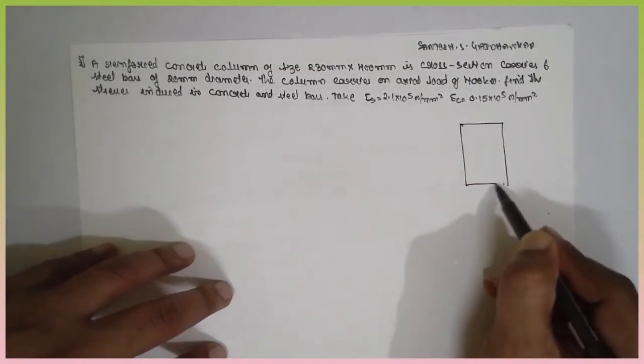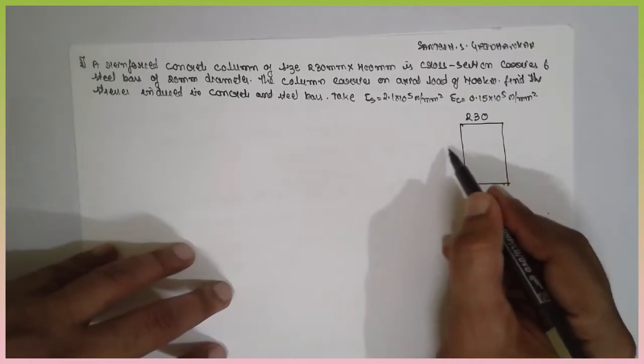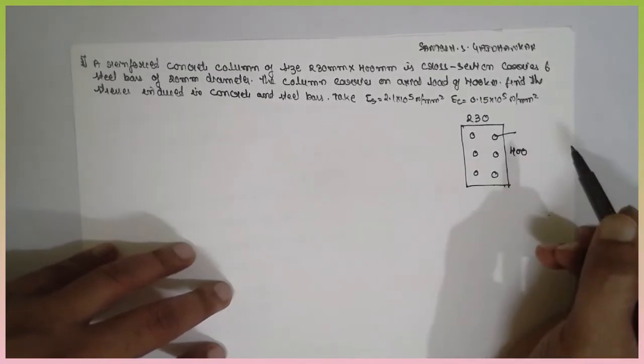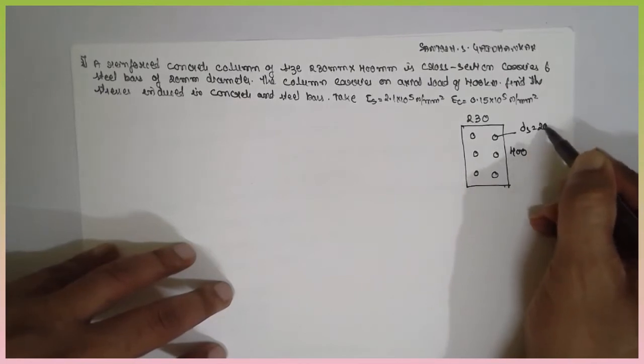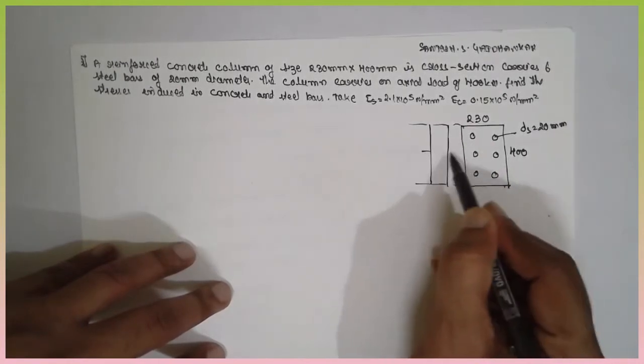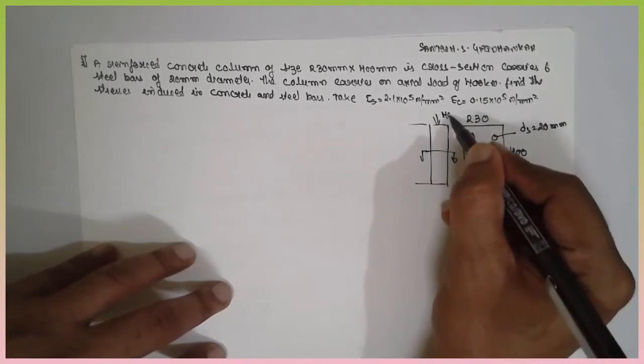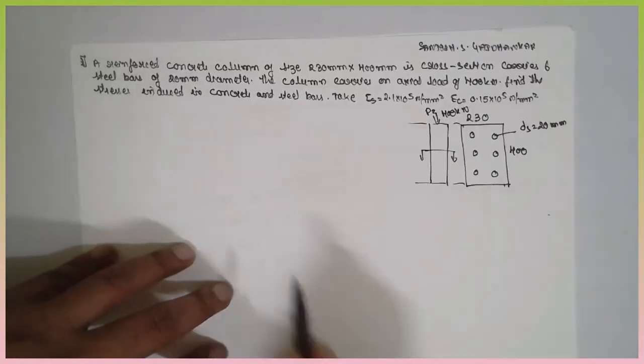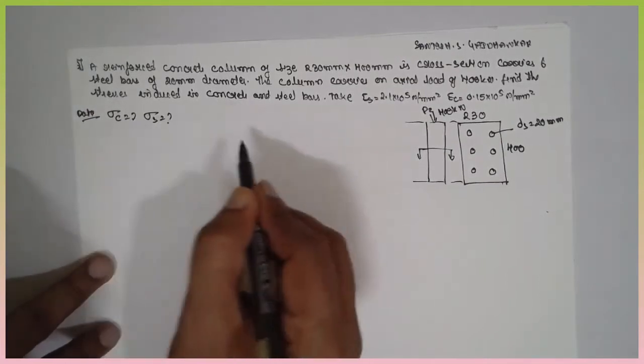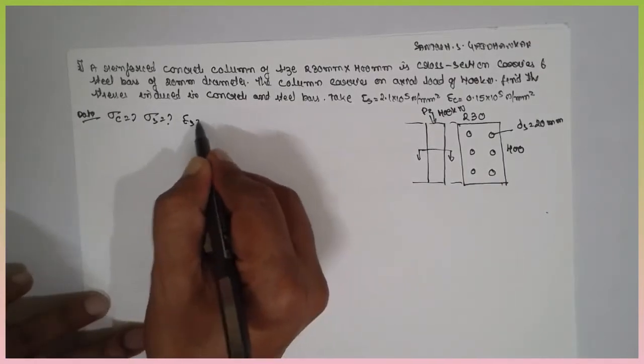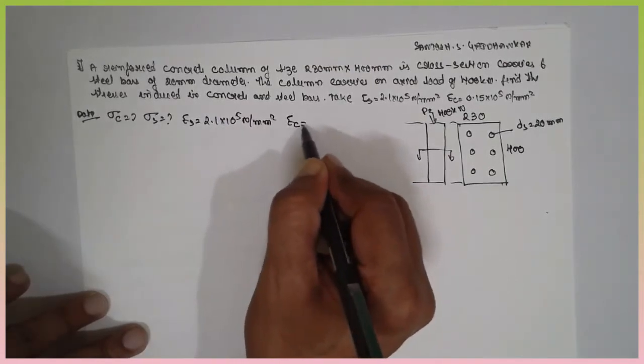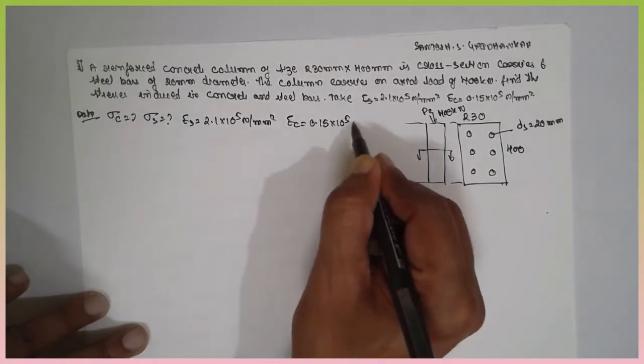A concrete block 230 by 400 mm. There are six steel rods whose diameter 20 mm they have given it. And it carries a load 400 kN, that means P they have given it. We have to find out stresses in concrete and stresses in steel. Now, Young's modulus 2.1 into 10 raise to 5 N per mm square. Young's modulus for concrete is 0.15 into 10 raise to 5 N per mm square.